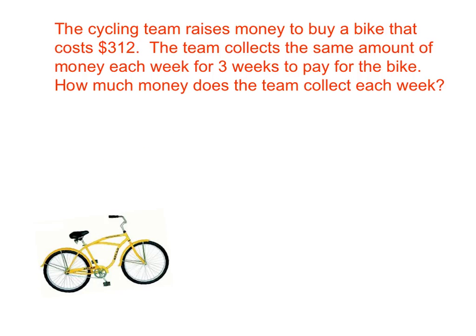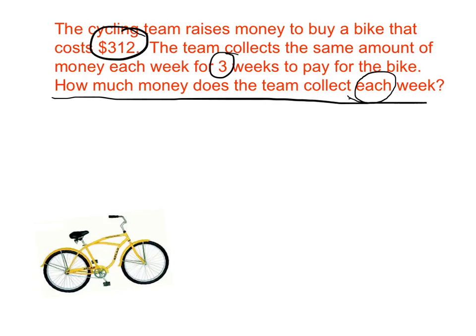The cycling team raises money to buy a bike that costs $312. The team collects the same amount of money each week for three weeks to pay for the bike. How much money does the team collect each week? I'm going to underline my question. I have a keyword, 'each,' and it's in the question — when it's in the question, it's telling me to divide. My two numbers are 3 and 312, so I'm going to divide 312 divided by 3.